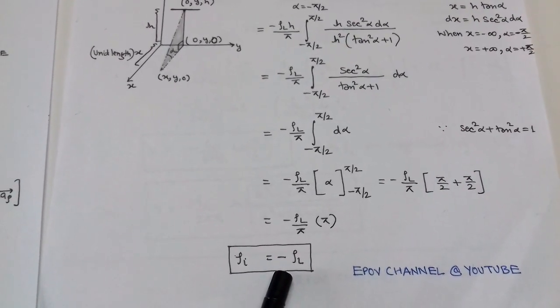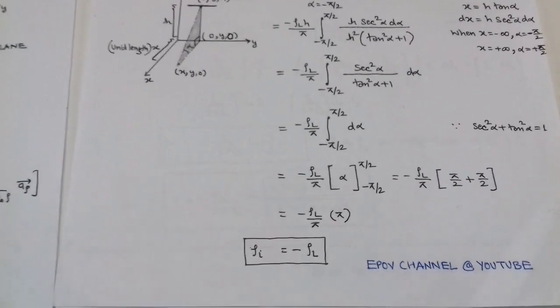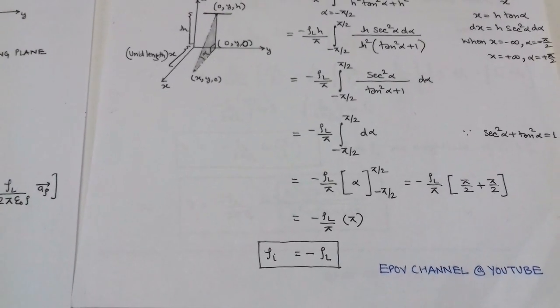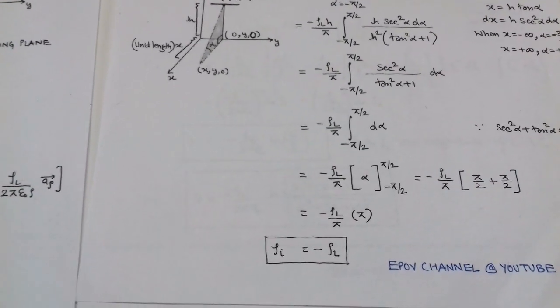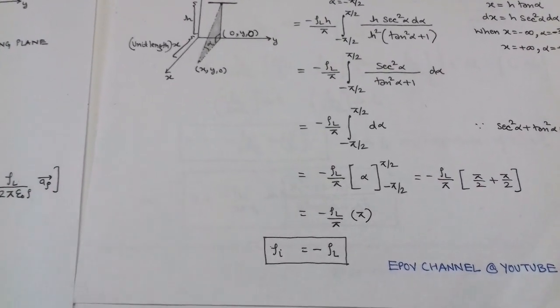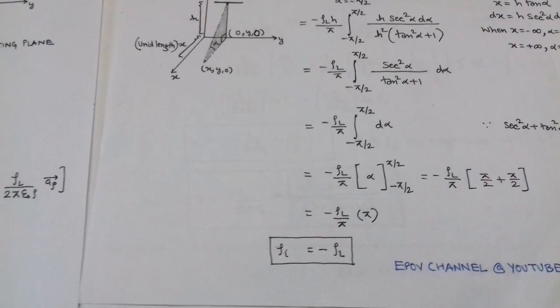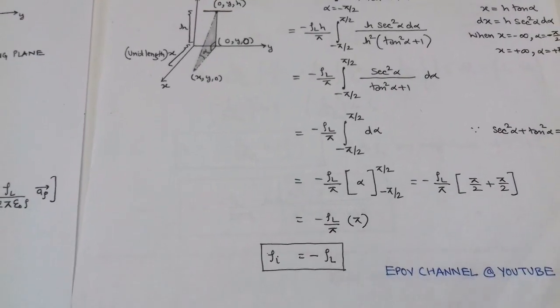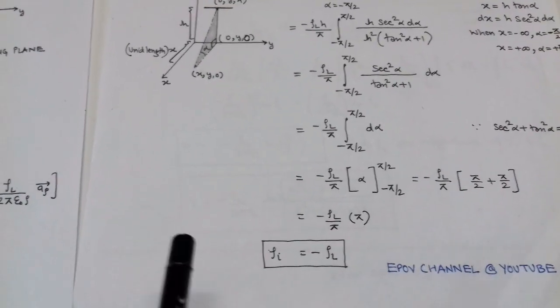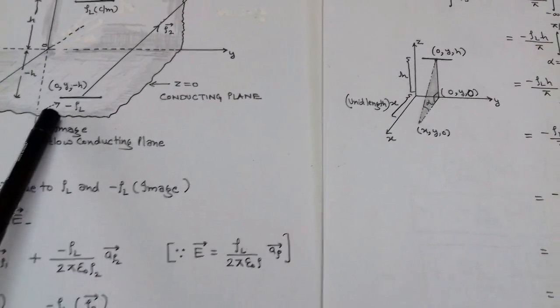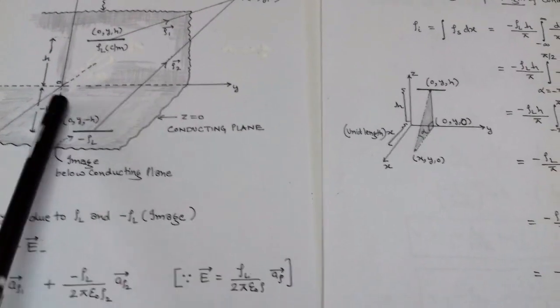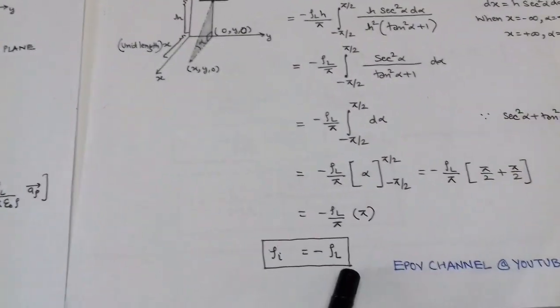This is the expected result: the line charge density rho_L has an image that is minus rho_L when the conducting plane is removed.